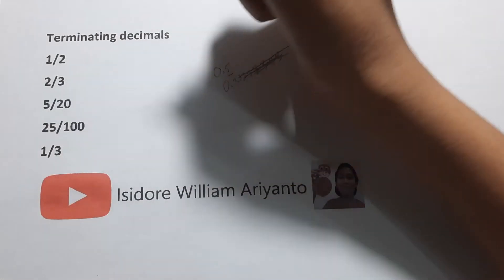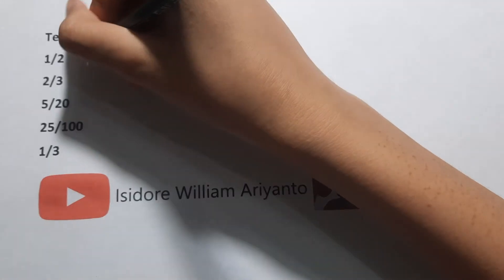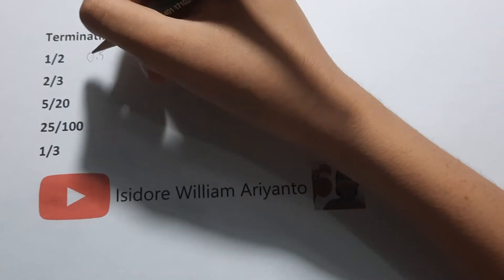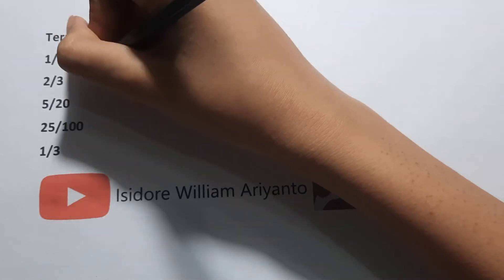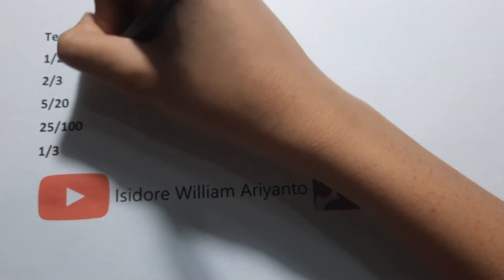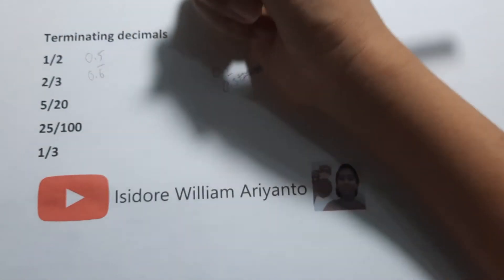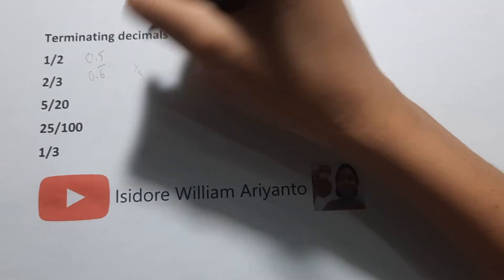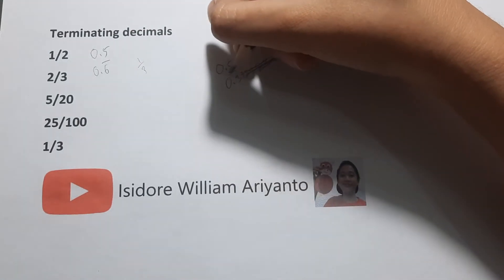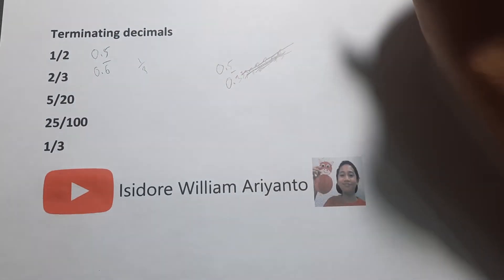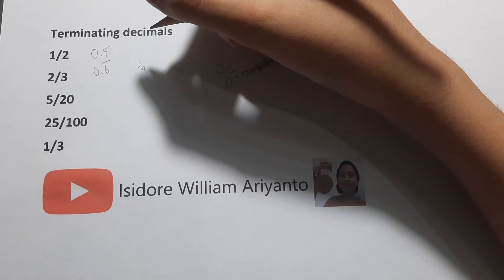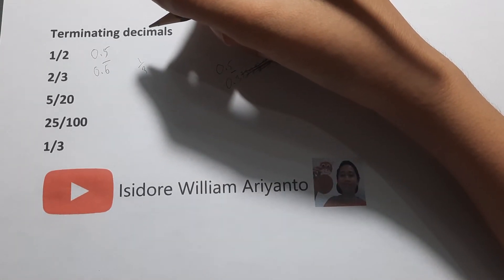One half is a terminating decimal since it equals 0.5. Two thirds — no, it's 0.6 bar, since one third equals 0.3333333, times it by 2 and you get 0.666666667.